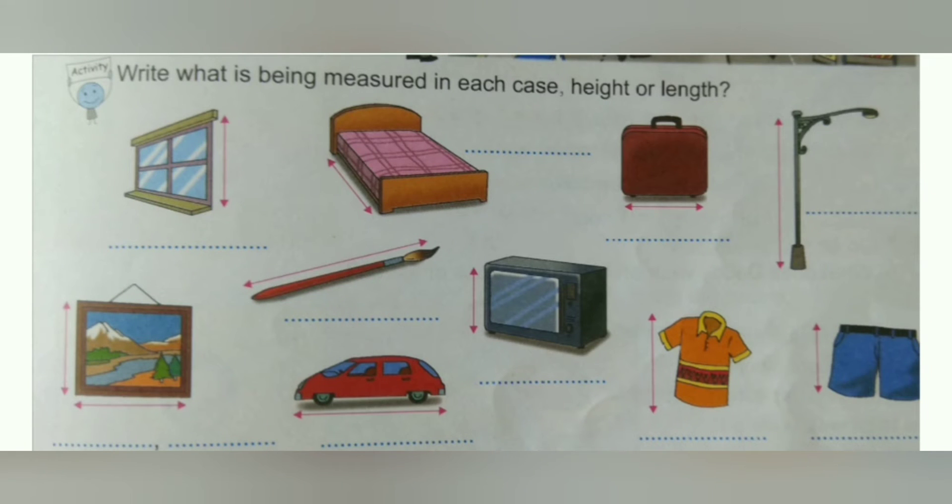The activity is to write what is being measured in each case, height or length. They have given images and arrows which show height and length. We have to write whether height or length is measured in the images. For example, the first one is window, and here height is measured. Find the remaining and write down and send me.